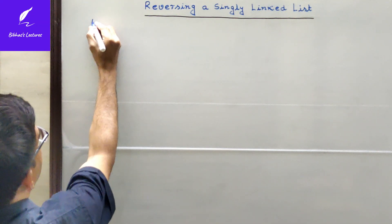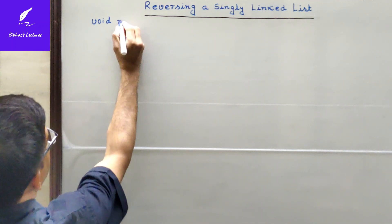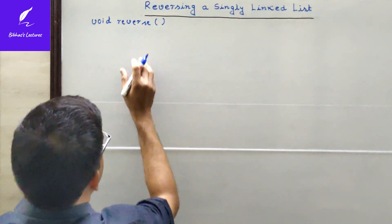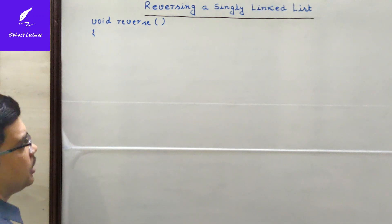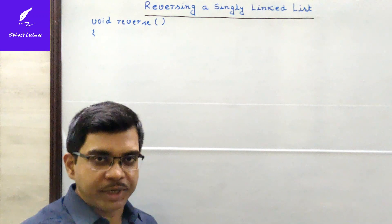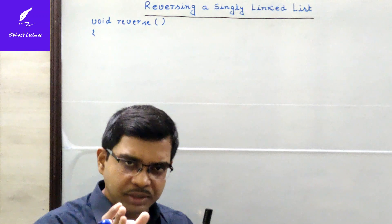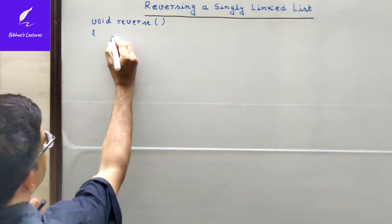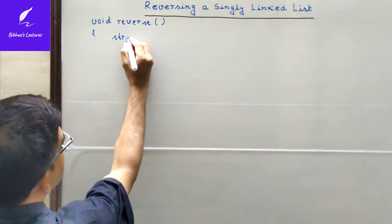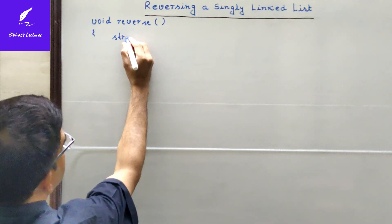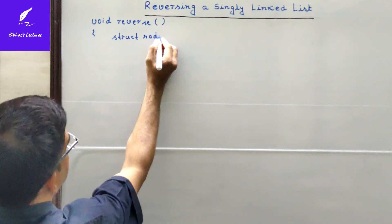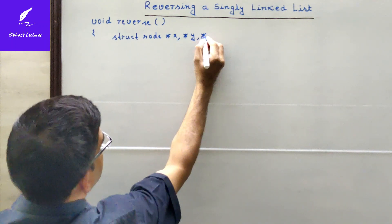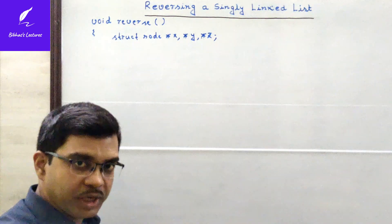The return type of the function is void, meaning when this function is called it will not return anything. The name of the function is reverse, and it is not accepting any parameter. First, we have to declare some node pointers — three different node pointers will be required to reverse the list: struct node *x, *y, and *z.